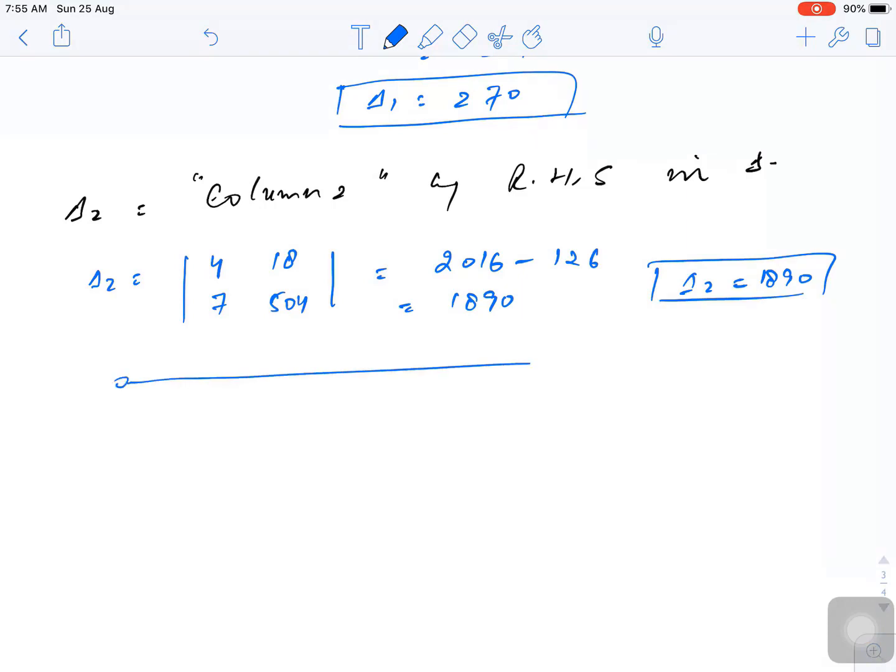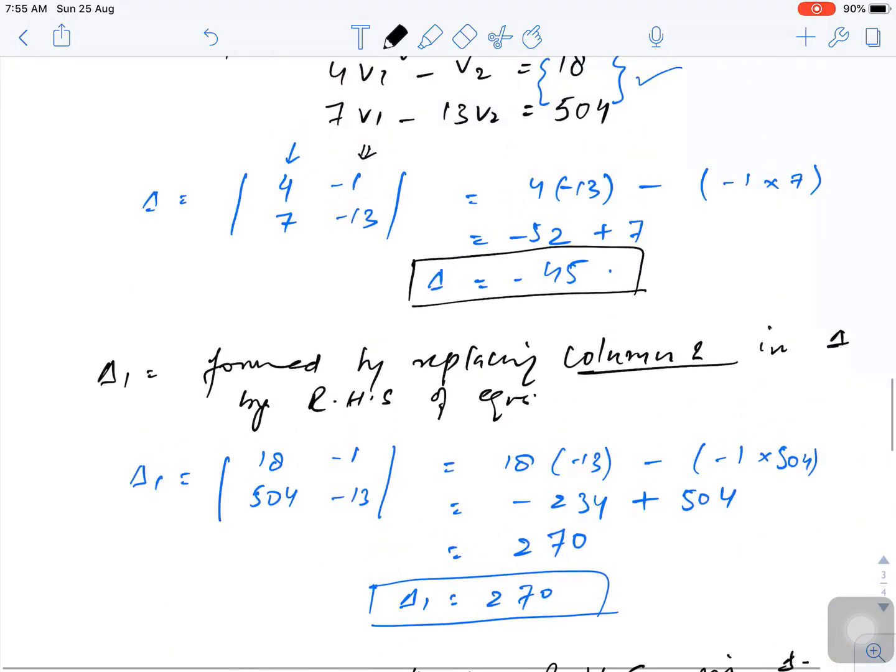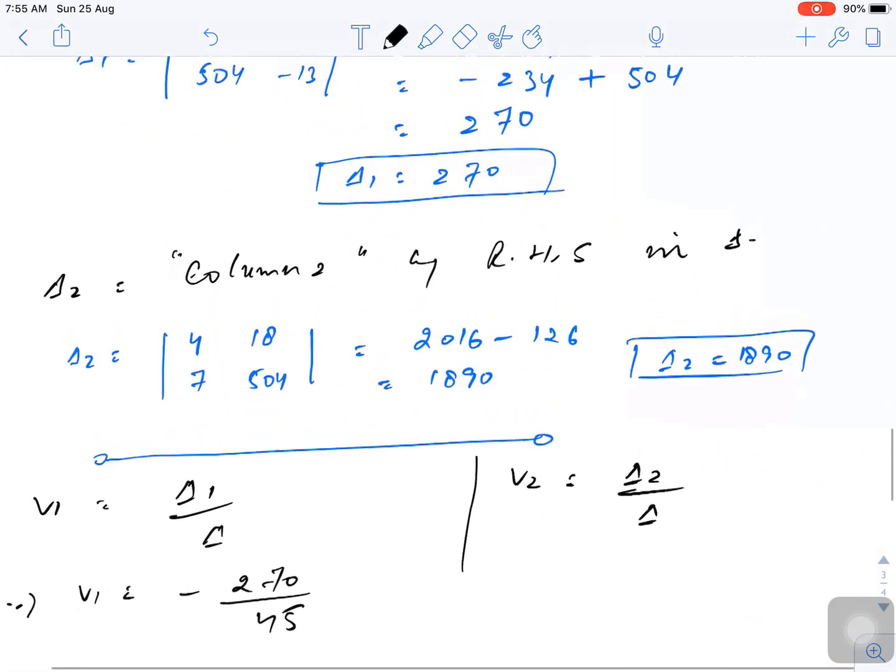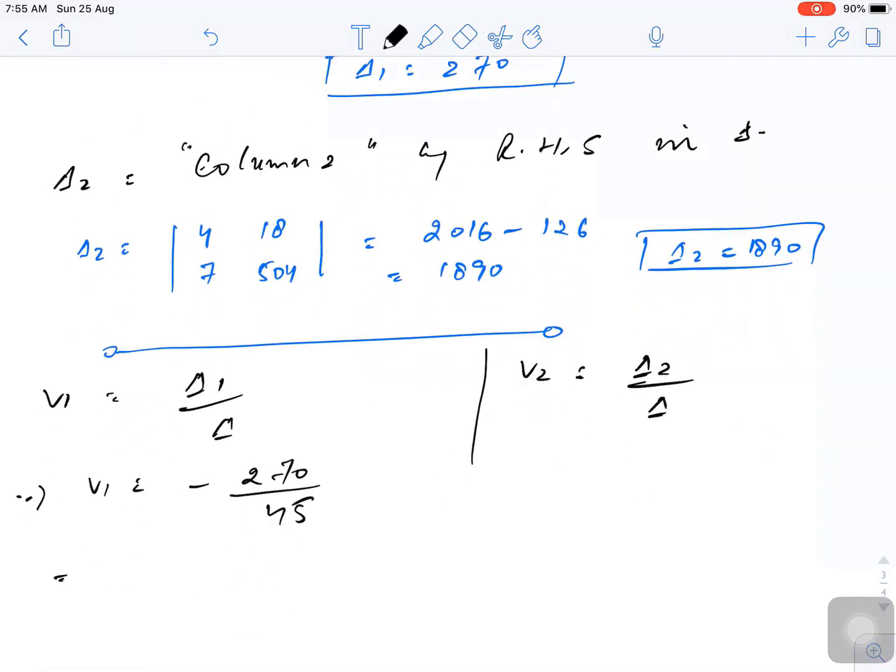Now as per Cramer's rule, we can say V1 is delta 1 by delta and V2 is delta 2 by delta. So simply put the values. V1 is 270 divided by minus 45. So V1 will be minus 6 volts.